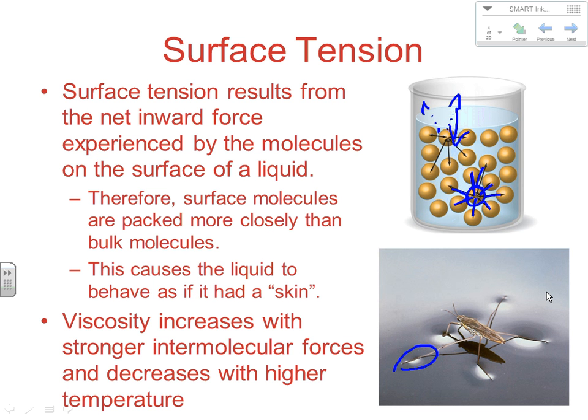You can't break surface tension enough on water by just heating it — by the time it would affect the water strider, you've already boiled the creature. But like viscosity, an increase in temperature decreases the effect of surface tension in a variety of other situations.